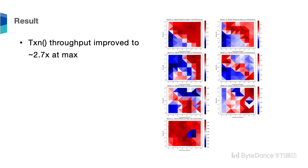On this page, the graphs on the right show the performance improvements when using a read transaction instead of a concurrent read transaction in transaction calls. The subplot on the top has a higher ratio of read operations, while the subplot on the bottom is mainly write operations. With different combinations of read and write operations, the performance improvements vary, but generally the transaction call throughput can improve to around 2.7 times the original performance.